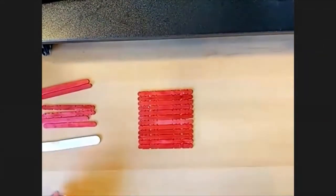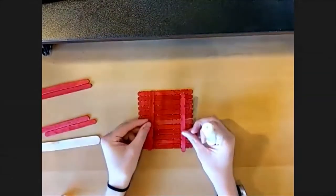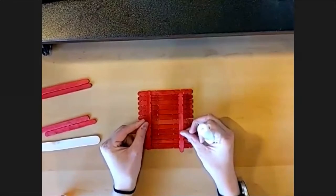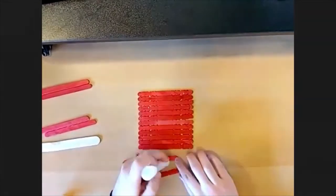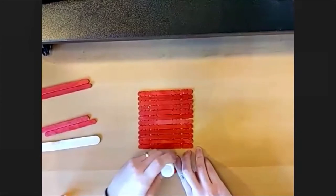And then we're going to arrange two popsicle sticks across to support this. This is going to be the base of the bird feeder. And I've got a glue stick. A glue stick does work, but it takes a little bit of extra time and pressure.